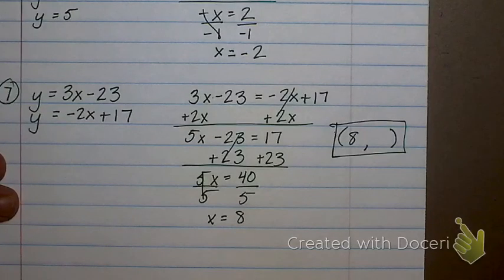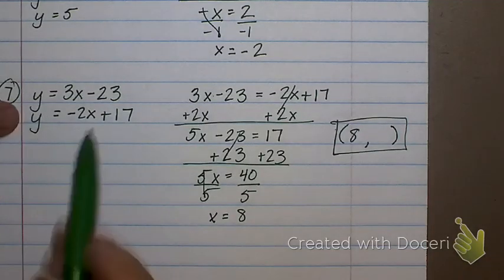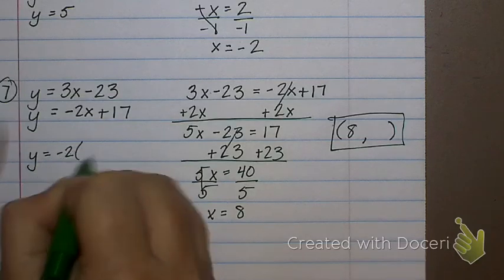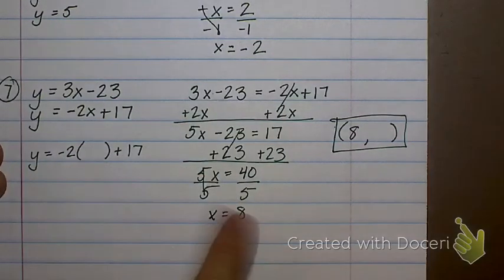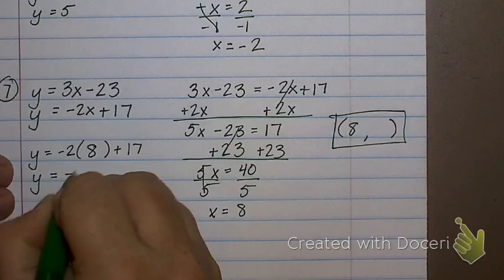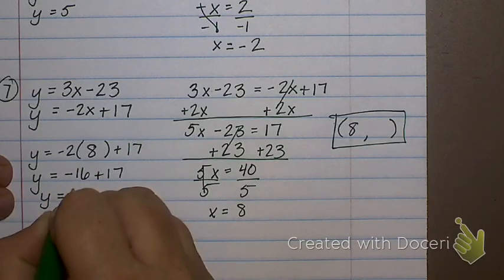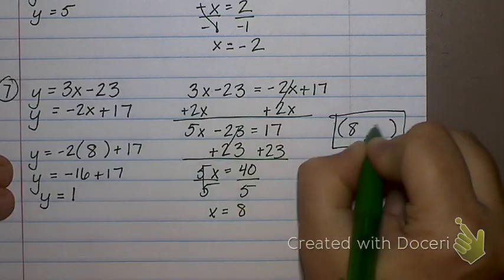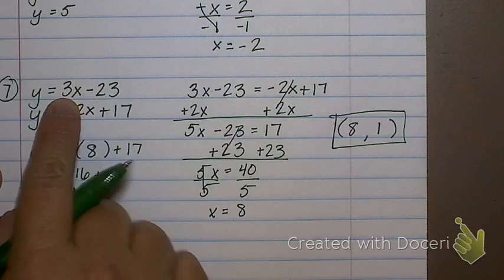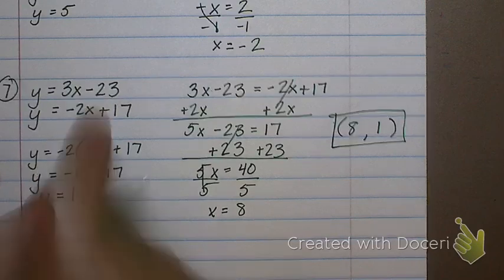How do I find y? Plug it back into either equation. It doesn't matter. I'm going to plug it into the second one. y equals negative 2x plus 17, and I'm replacing x with 8. Negative 2 times 8 is negative 16 plus 17. What is negative 16 plus 17? 1. Now, if you had plugged your 8 into the other equation, you would still get 1. Because 3 times 8 is 24, minus 23 is 1. So it doesn't matter where you go there.